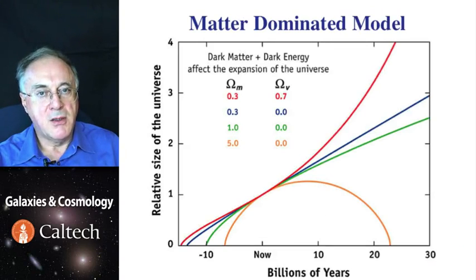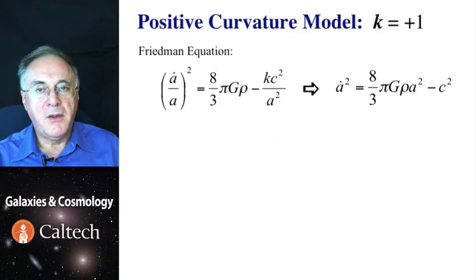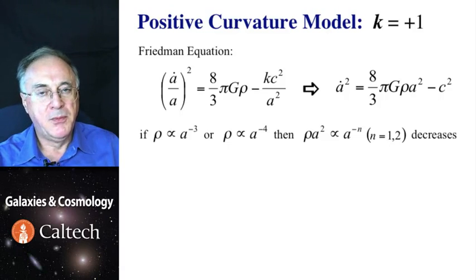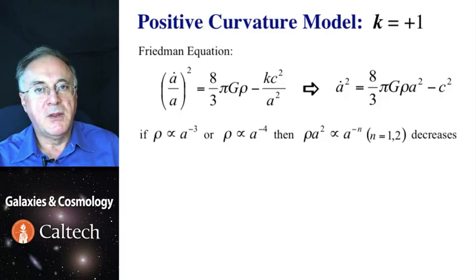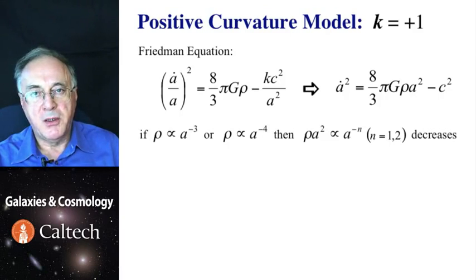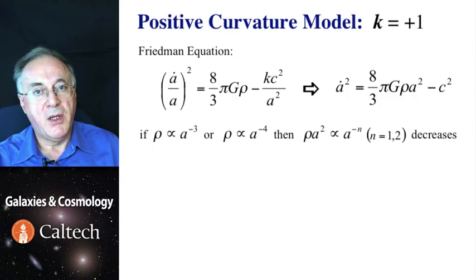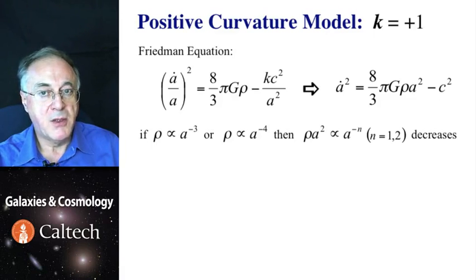Now let's consider a more general case. Models in which matter, radiation, cosmological constant or dark energy can be present. First, let us look at the model with positive curvature. Here we can write the Friedman equation again, and transform it as shown here. Now, if the density declines as a third power of scale factor, as it would be appropriate for the matter filled universe, or as fourth power, as it is appropriate for radiation, then in any case, the product of the density and square of the scale factor declines as scale factor on power, it's either minus one or minus two.